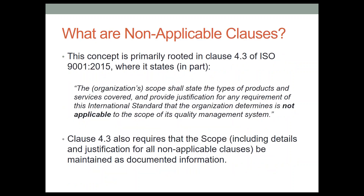Let's begin with non-applicable clauses. The concept is primarily rooted in Clause 4.3 of the 2015 version of ISO 9001, where it reads in part that the organization's scope shall state the types of products and services covered and provide justification for any requirement of this international standard that the organization determines is not applicable to the scope of the system. That's where the terminology comes from — non-applicable clauses. Clause 4.3 also requires that the scope, including details and justification for all non-applicable clauses, be maintained as documented information.